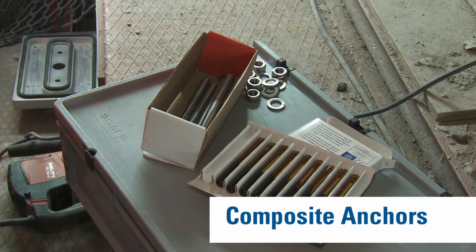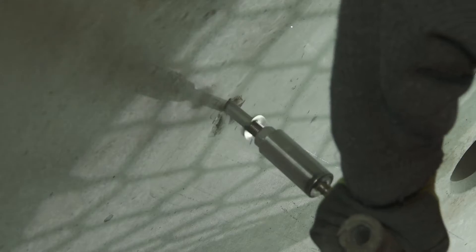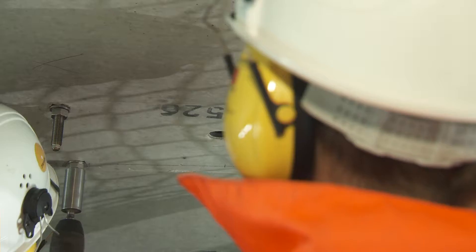The cartridges on the composite anchors contain two chemicals, which react with each other the moment the container is destroyed. The threaded anchor is glued into the concrete within a very short time. This connection is so stable that a passenger car could be hung from it.